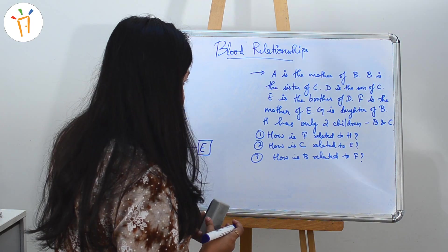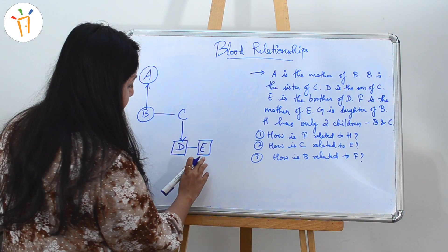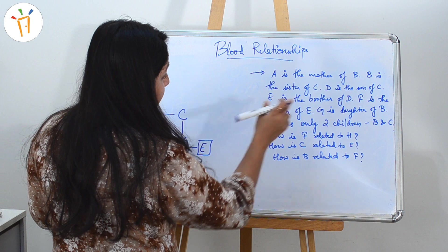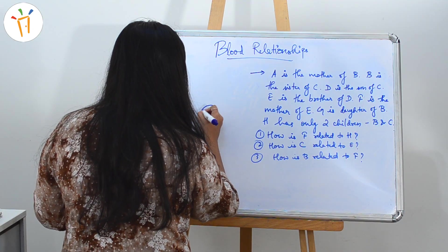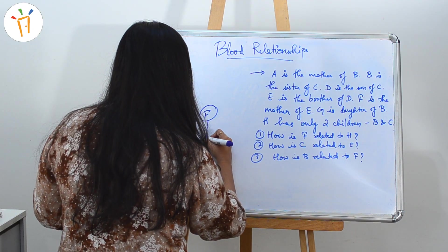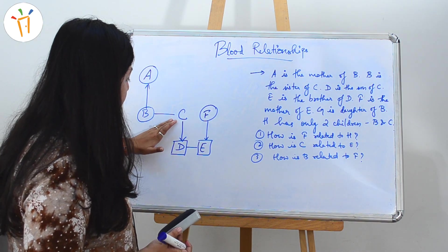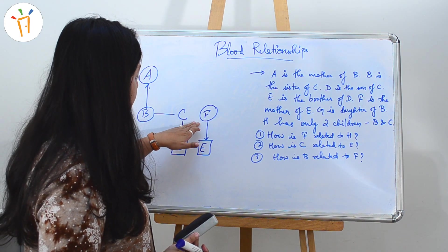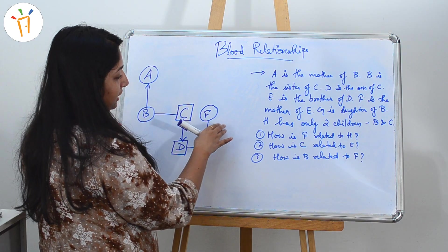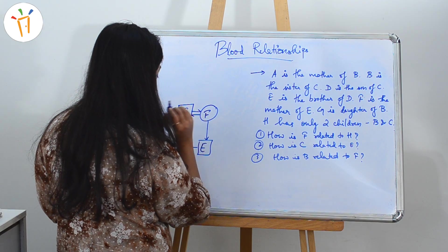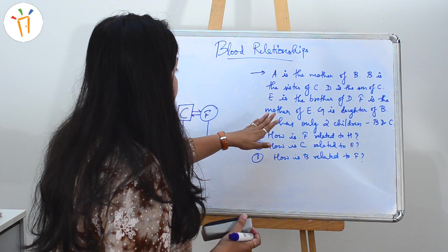F is the mother of E. We have E here, and F is the mother, so we write F above and denote her with a circle and a down arrow. Previously it was said D is the son of C, and now F is the mother of E — so C will be the father and F is the mother, meaning they are a couple. We'll denote it with a bi-directional line.